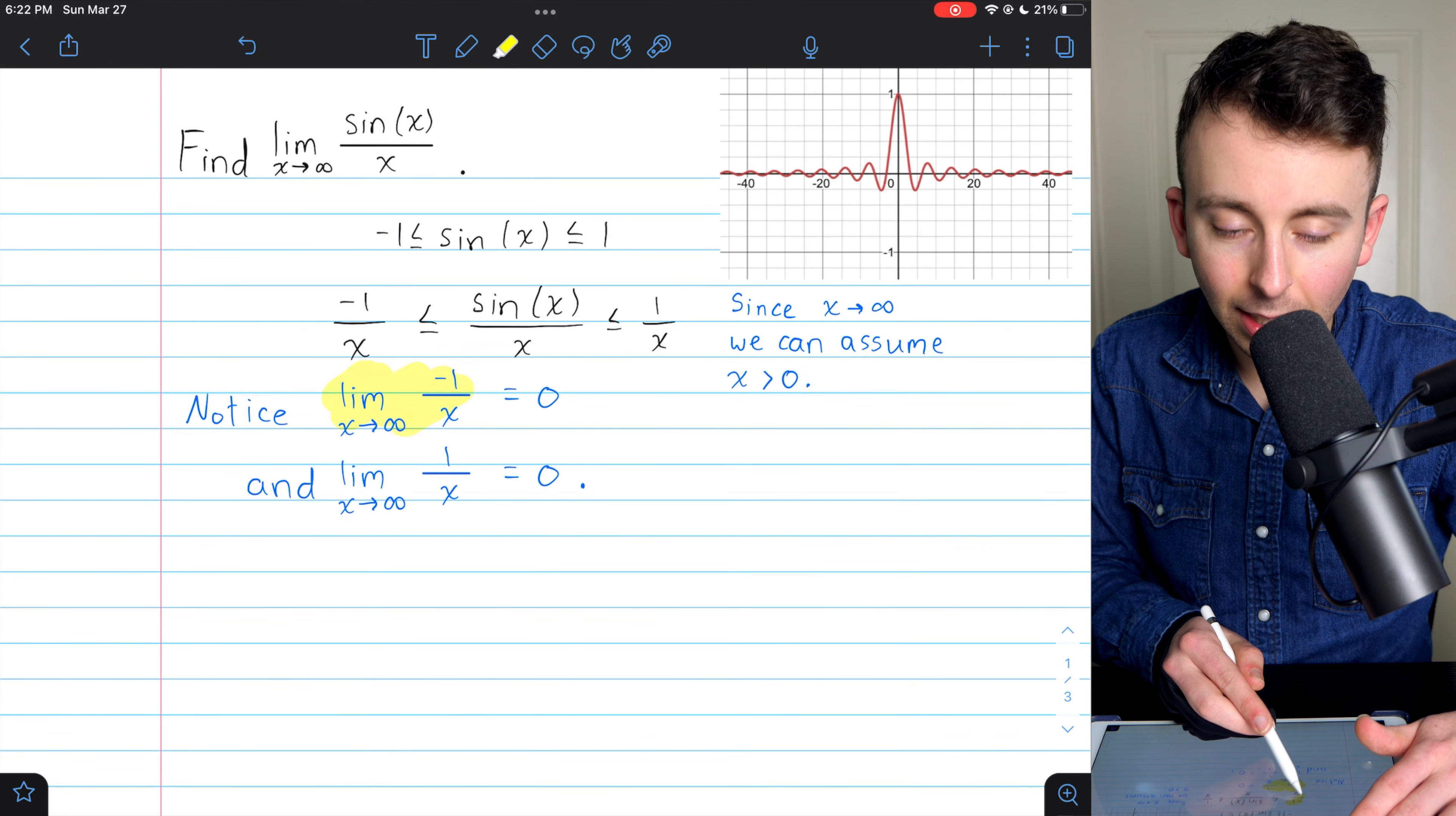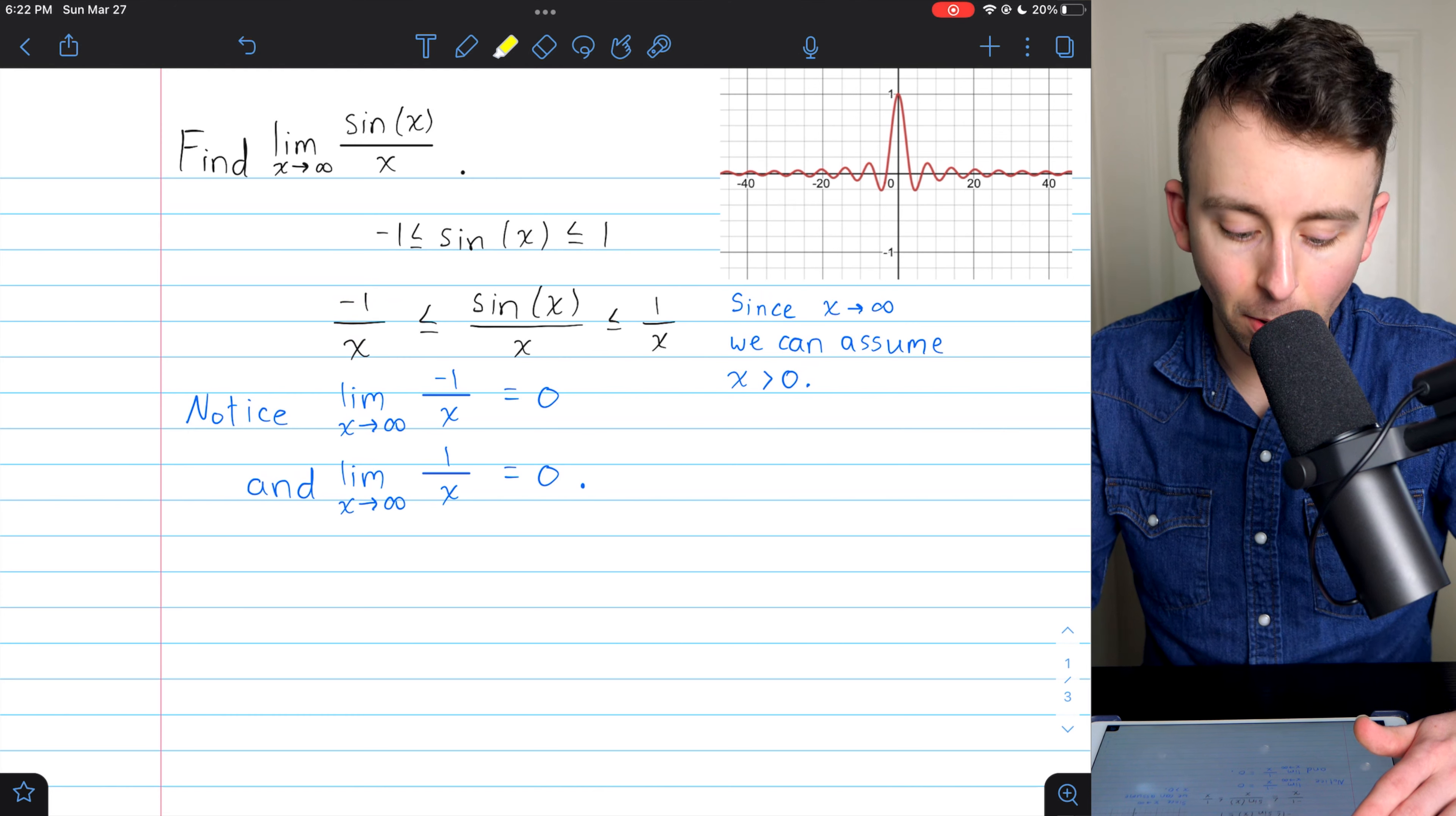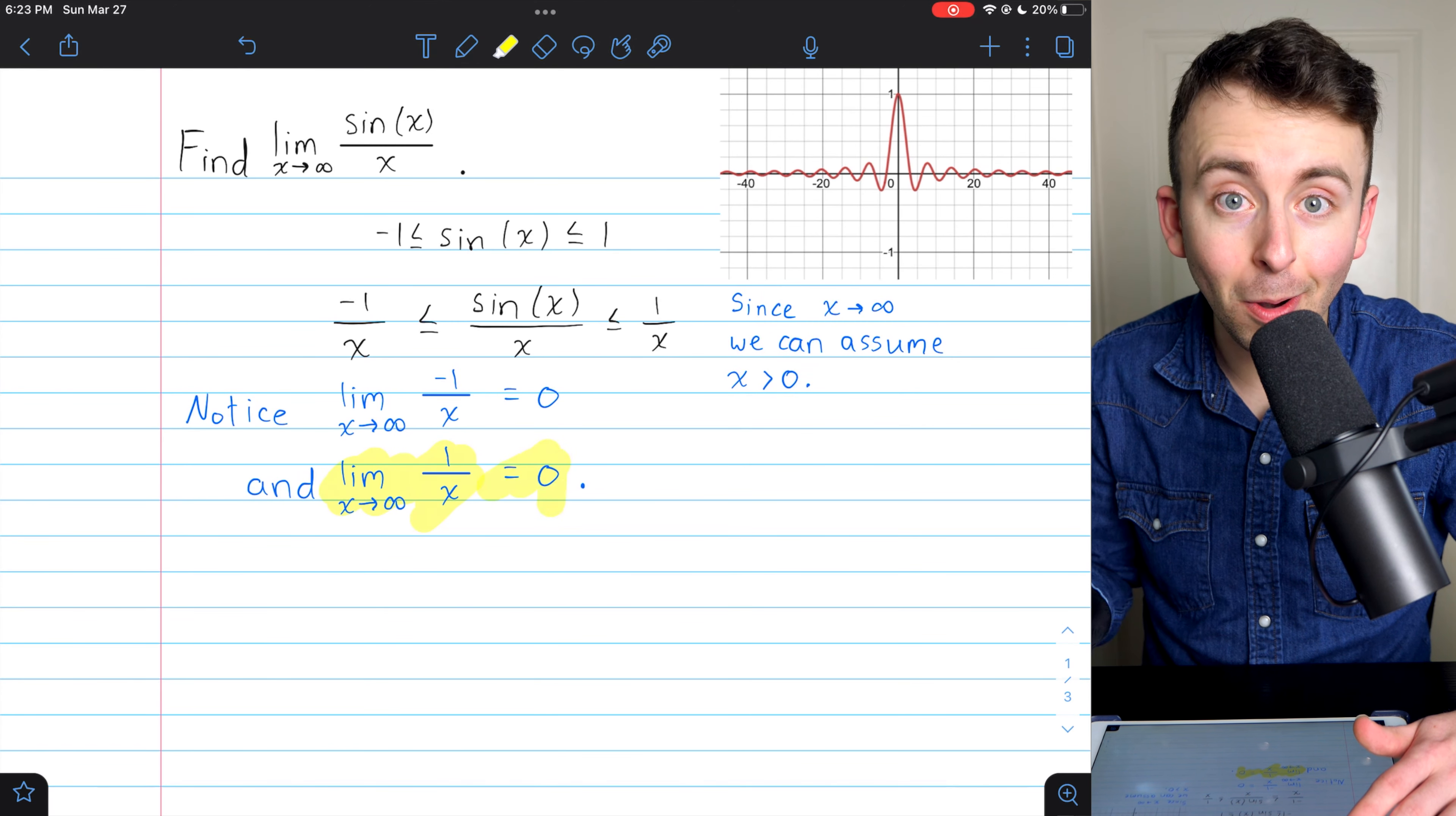So what's the limit of negative 1 over x as x approaches infinity? It is, of course, just 0. It's negative 1 divided by a really big number. What about the function on the right, 1 over x? What's the limit of 1 over x as x goes to infinity? It is, similarly, 0.